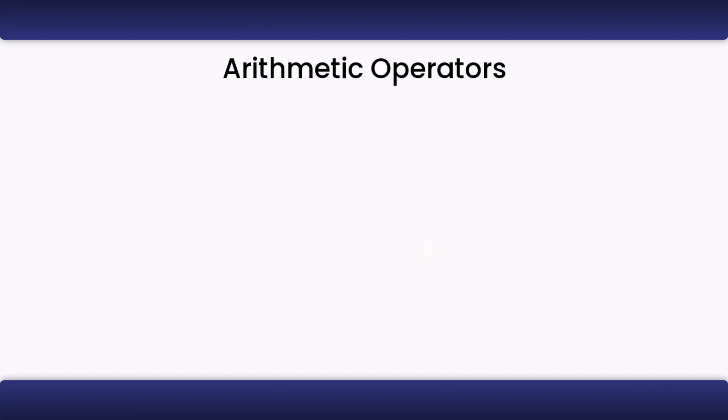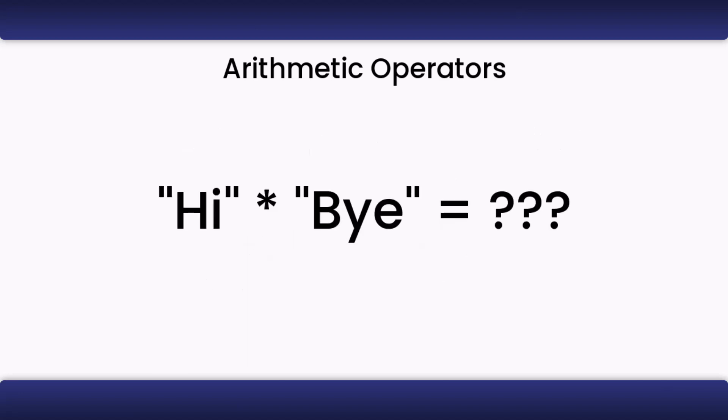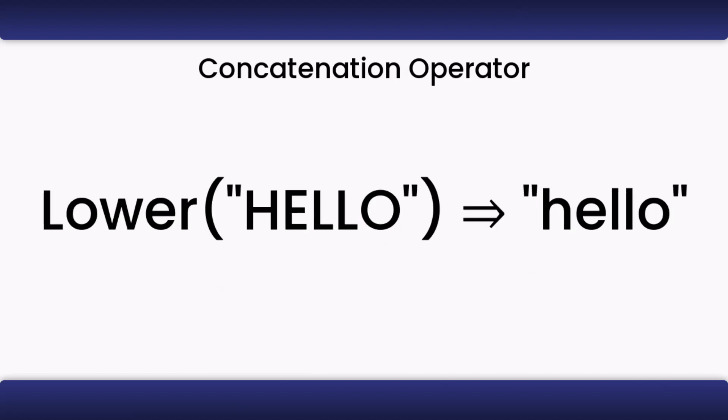Most data types use the basic math operations: addition, subtraction, multiplication, and division. However, text does not use these operations. You can combine two pieces of text or strings with an ampersand. Other operations on text are done by using functions.